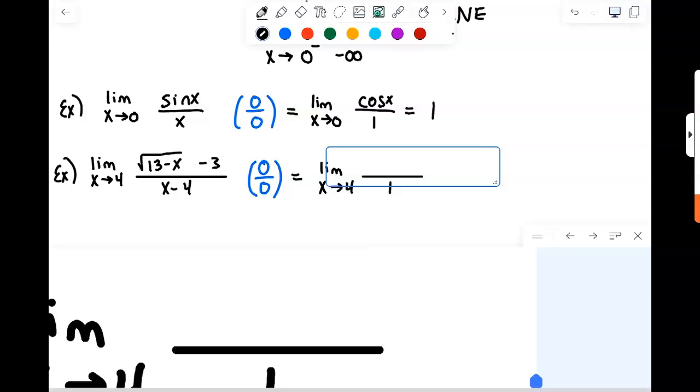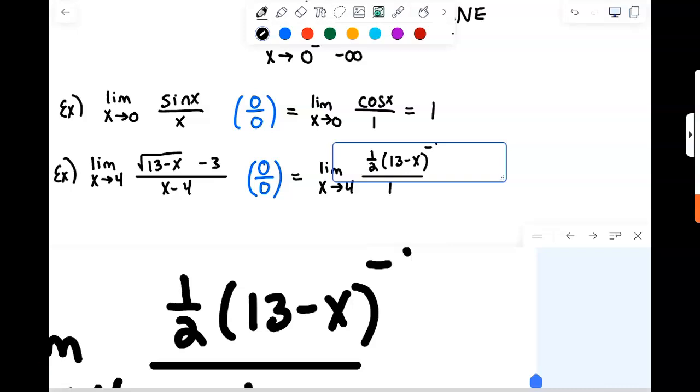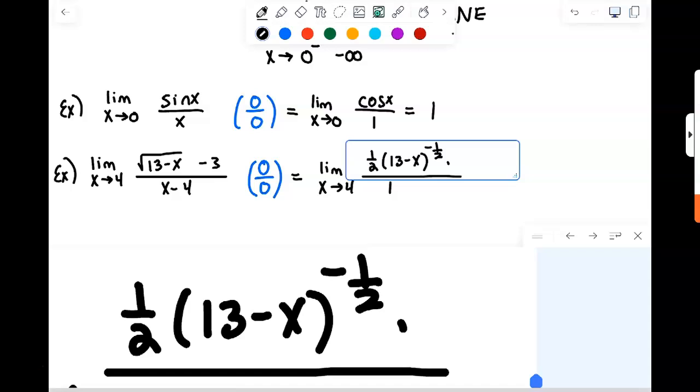derivative of 13 minus X to the 1 half will be 1 half times 13 minus X to the negative 1 half times the derivative of 13 minus X.